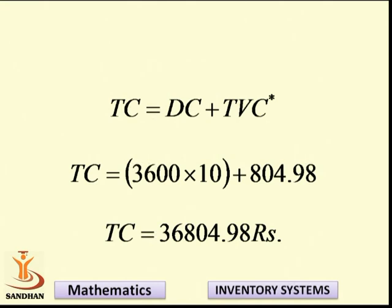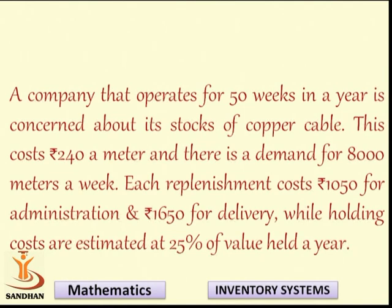In the basic EOQ model the formulation is straightforward. Let us now look at another example: a company operates for 50 weeks, with a demand of 8000 meters per week, a product cost C of ₹240, and given replenishment and administration costs. Here the annual demand is not given directly — it must be derived from the weekly demand and operating weeks.